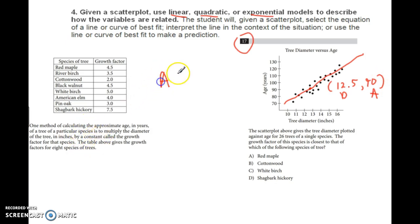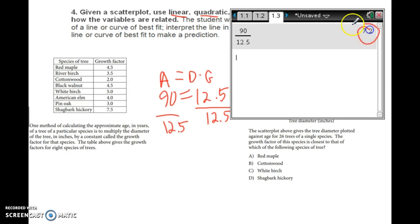So if we know A equals 90 and diameter equals 12.5, we can calculate the growth factor. Dividing 90 by 12.5, I get 7.2, which is closest to one of the answer choices. It wasn't exact, but that's the closest match among the different growth factors listed. That would be the correct answer.